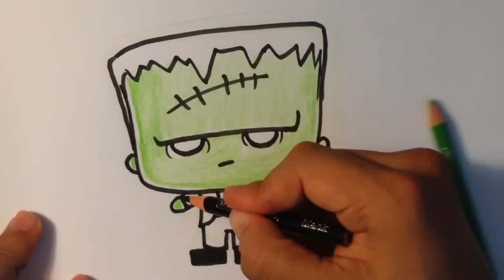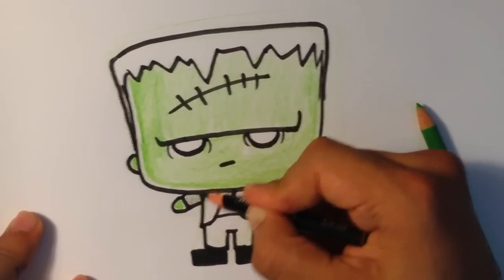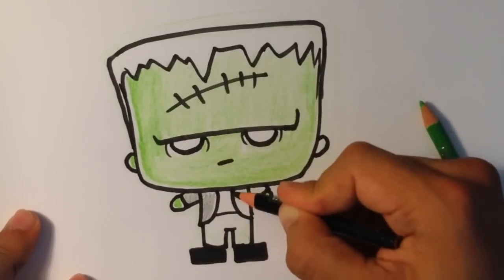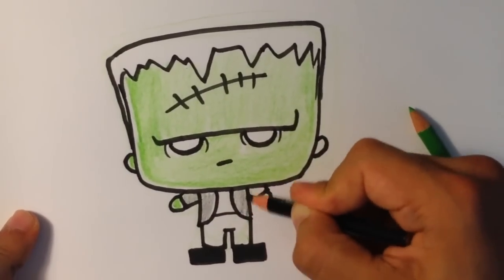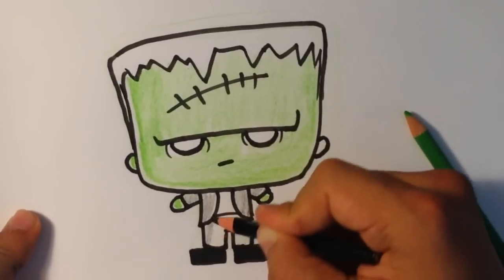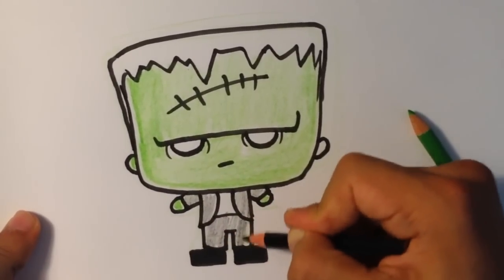And then for the suit, I tend to take this black. I don't have a gray, but I tend not to push all the way down. And then color the suit. I usually leave the shirt white.